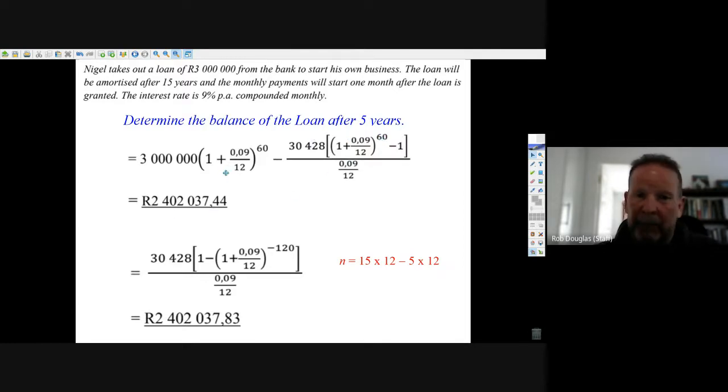Just put your 5 years worth of payments in, what the monthly payment is, times one plus the interest to 60 months worth of interest, 60 payments, all over the interest rate. That's the future value formula and you get R2,402,037.44.